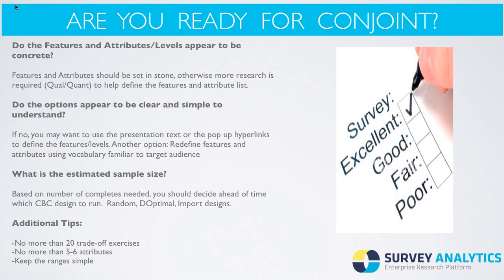The third question: what is the estimated sample size? Based on the number of completes you need, decide ahead of time which choice-based design to run — typically choosing between random, deoptimal, or import design. If you need a lot, random design is best; if you're working with a small amount, deoptimal will give you a very good statistically significant output. Additional tips: aim for no more than 20 trade-off exercises, no more than five to seven attributes, and keep the ranges simple so concepts don't require respondents to think further than they absolutely need to.